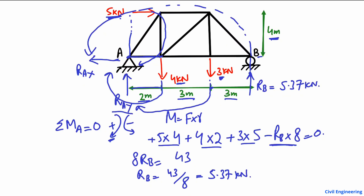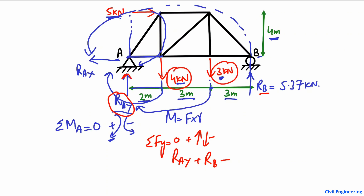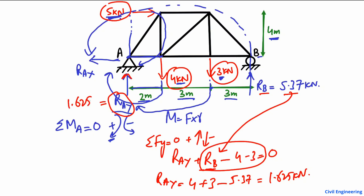Now, how to find RAY? We take the summation of all vertical forces equal to zero, where upward forces are positive and downward forces are negative. The downward forces are 4 kN and 3 kN, and RB is now known as 5.37 kN. Shifting the known values to the right side gives RAY = 4 + 3 − 5.37 = 1.625 kN, acting in the upward direction.